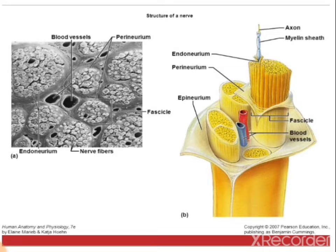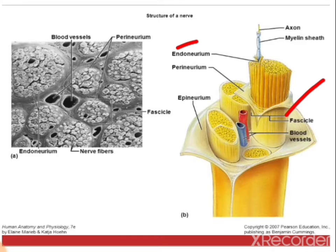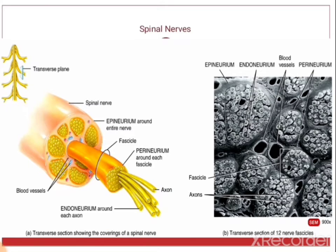In the diagram we can see how nerve formation occurs. A nerve is formed by the collection of axons; these axons form a bundle called a fascicle. The fascicle is surrounded by perineurium, and each axon is surrounded by endoneurium. Different fascicles enclosed by the epineurium together form the nerve.